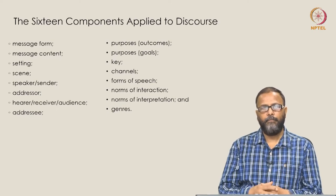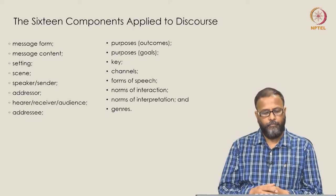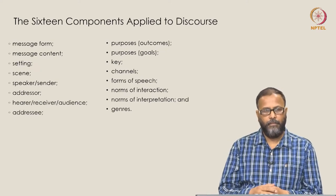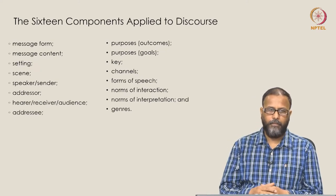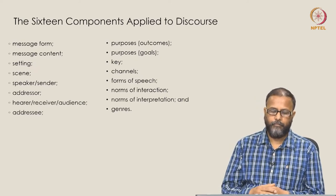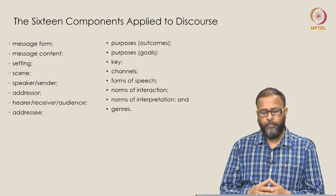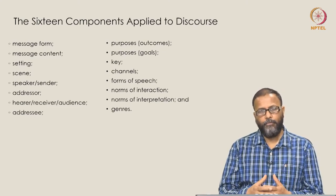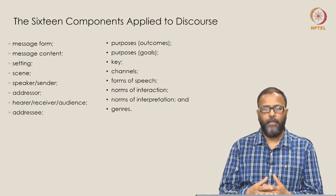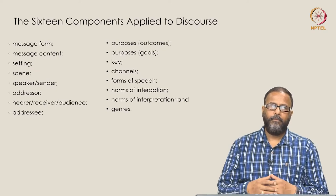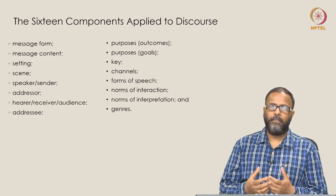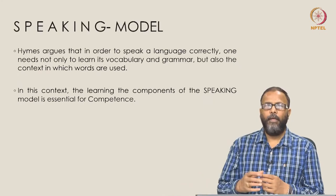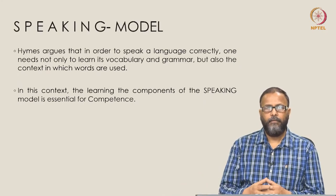The 16 components are: message form, message content, setting, scene, speaker or sender, addresser, hearer or receiver, audience, addressee, purposes as outcomes, purposes as goals, key, channels, forms of speech, norms of interaction, norms of interpretation, and genres. These 16 elements are clubbed into eight, giving us the SPEAKING model.